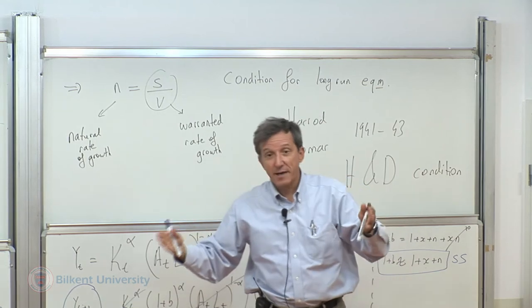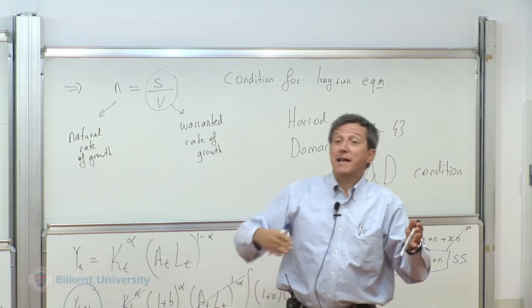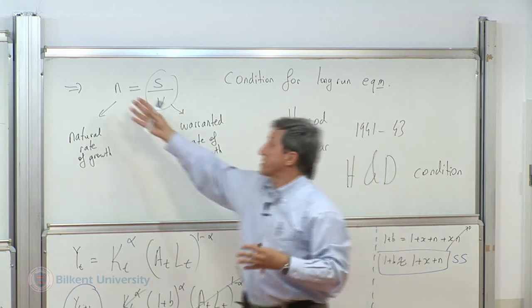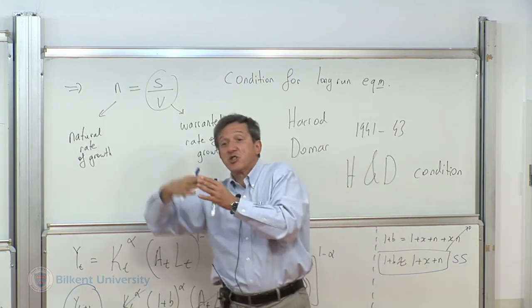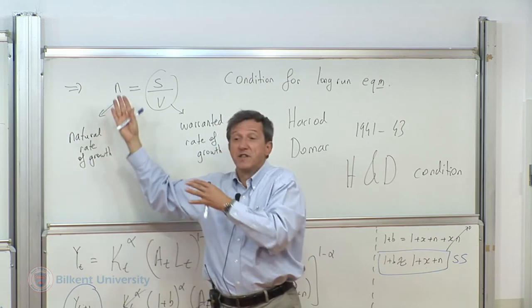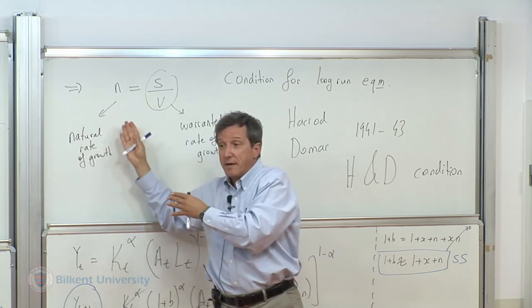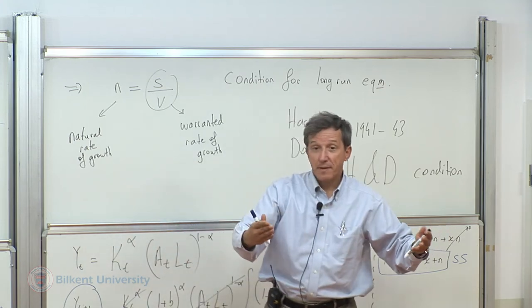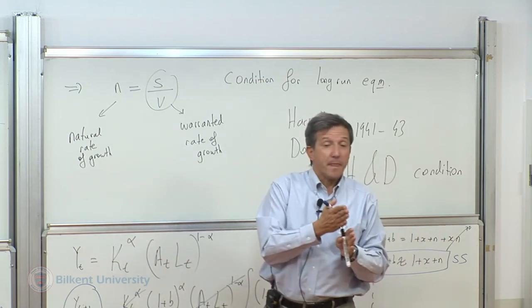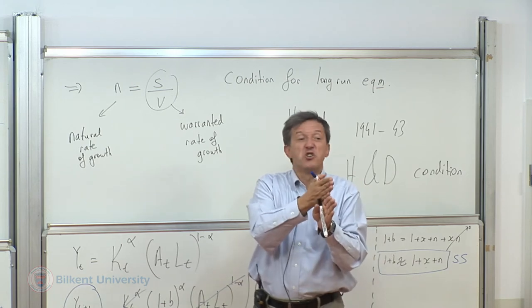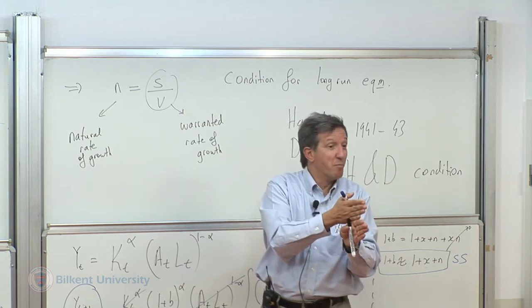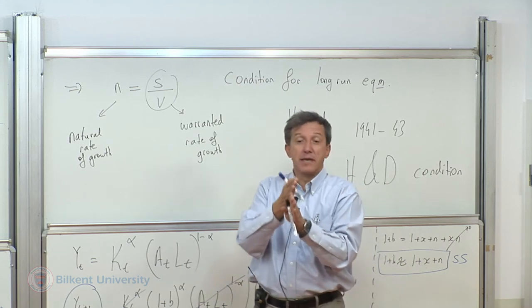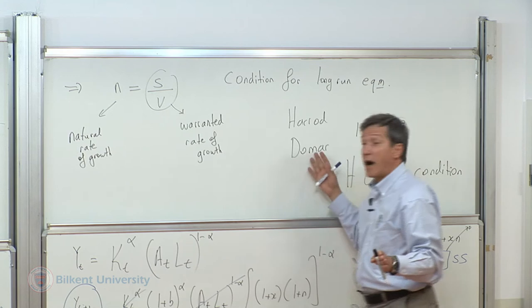And if it happens out of miraculously, but then a shock happens, a group of Syrians come for a couple of years, and we are thrown out of equilibrium, even if we were miraculously there, there is nothing to guarantee that we'll stay there over time. This is a razor's edge model. Even if it's an equilibrium, it is not a stable equilibrium, according to Harrod and Domar.